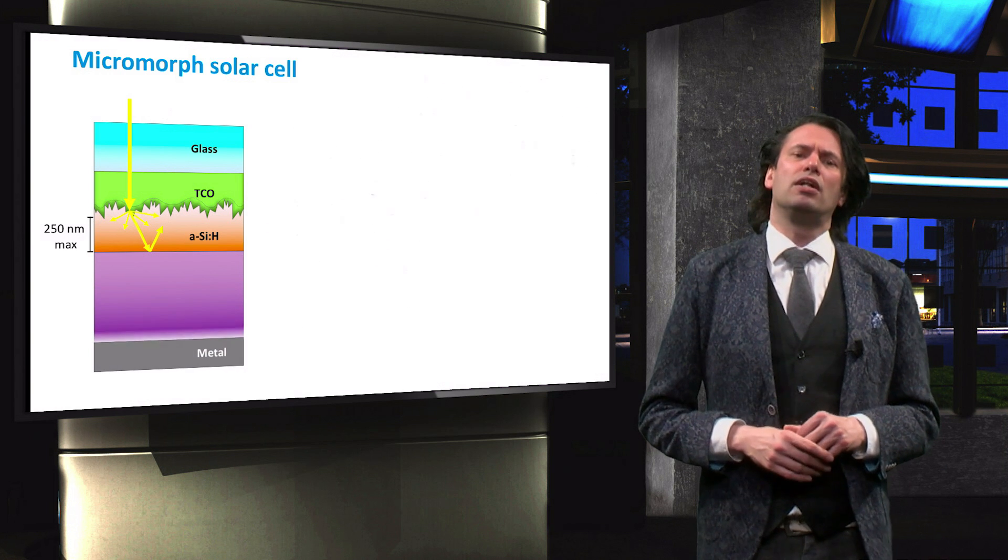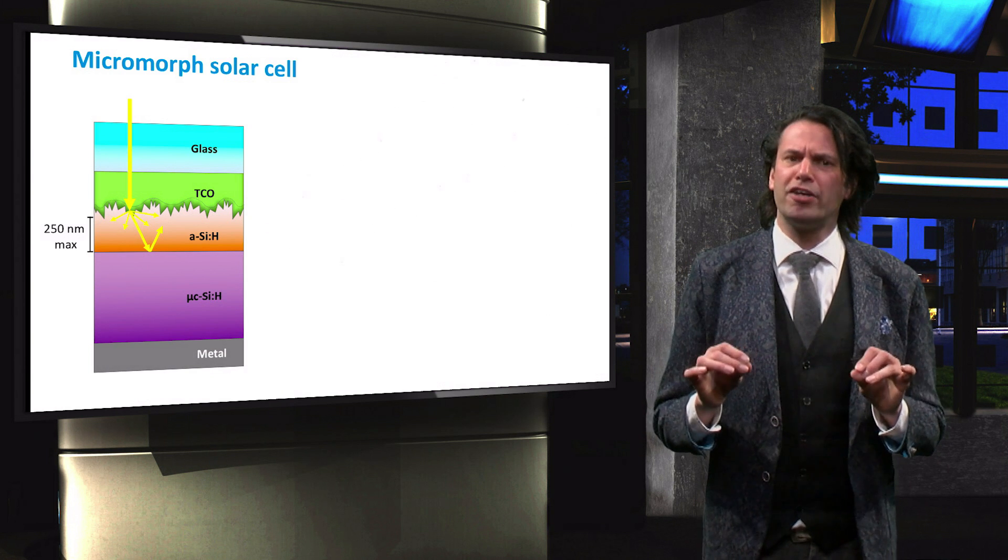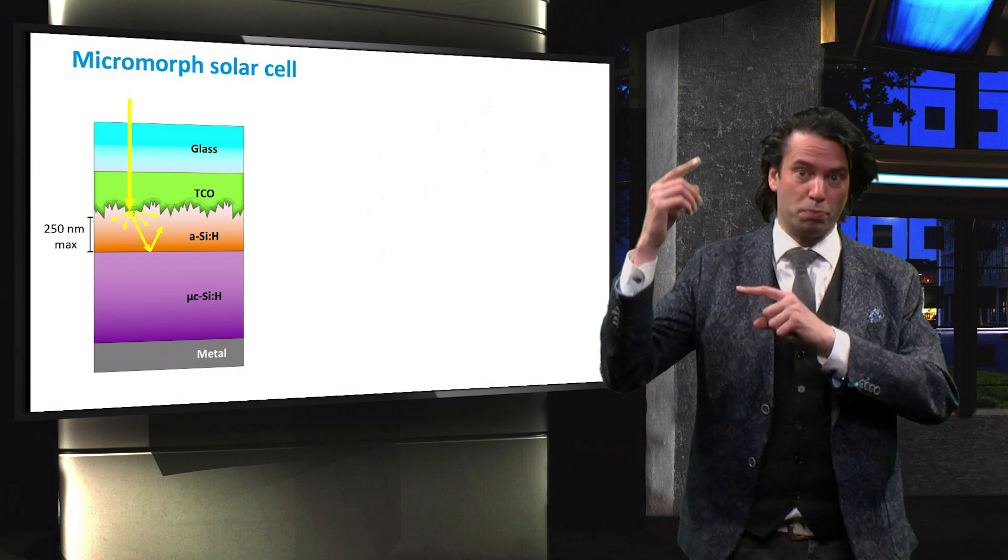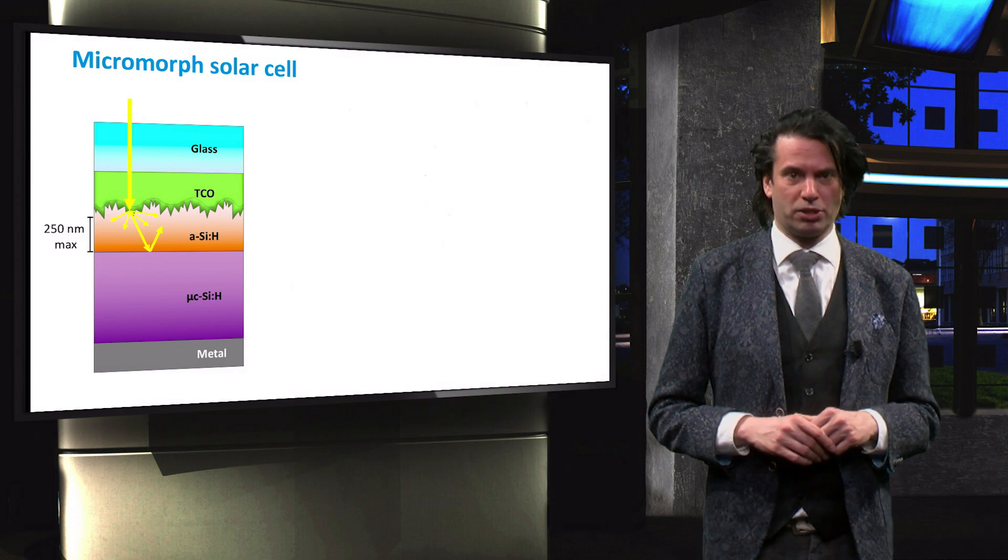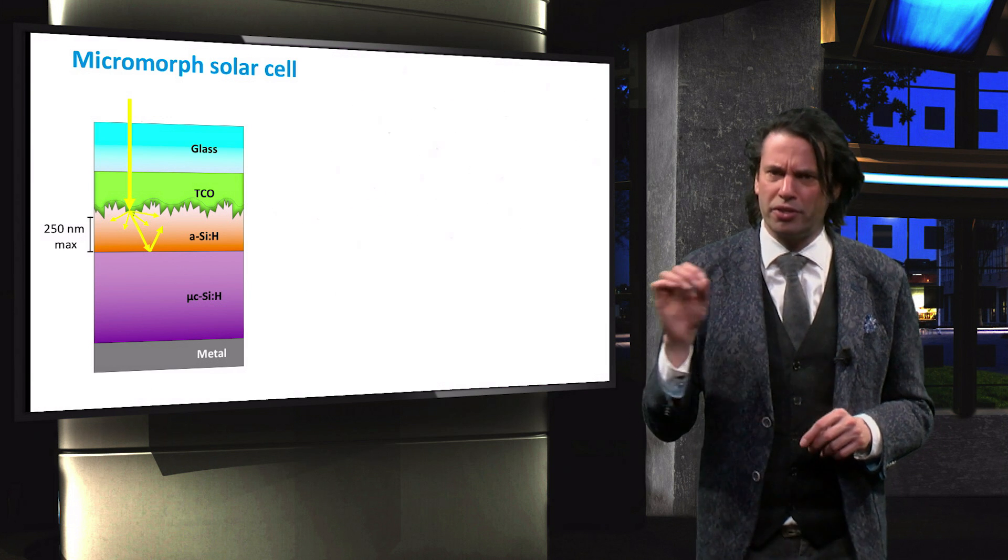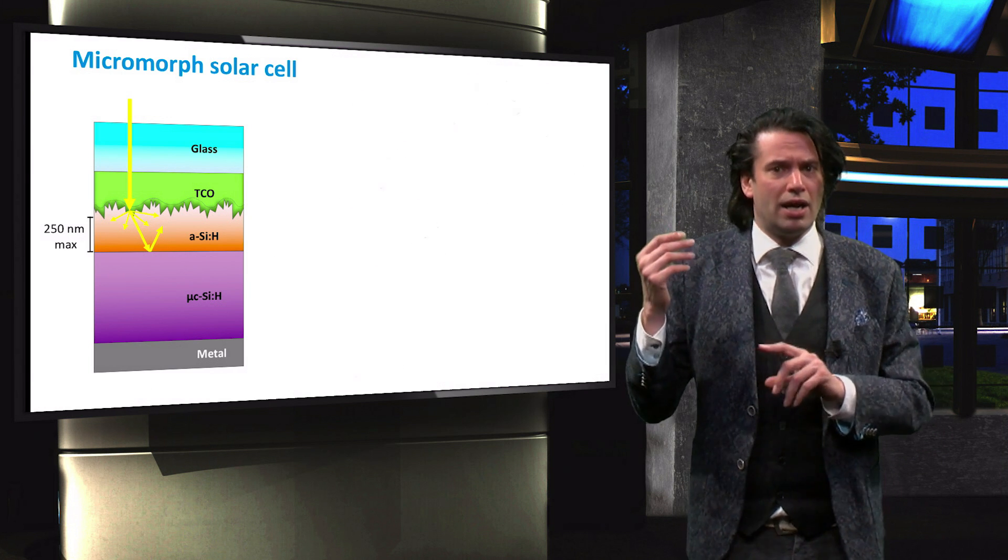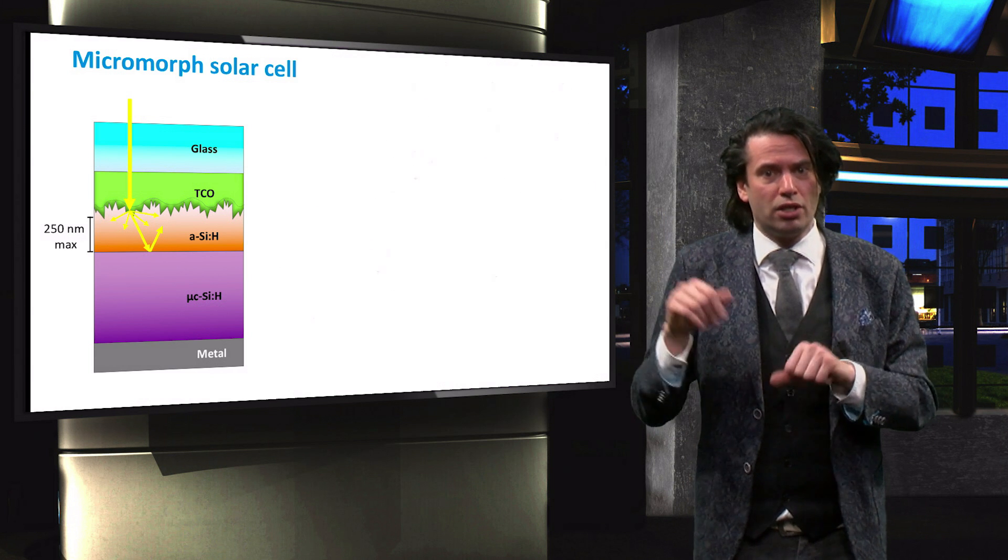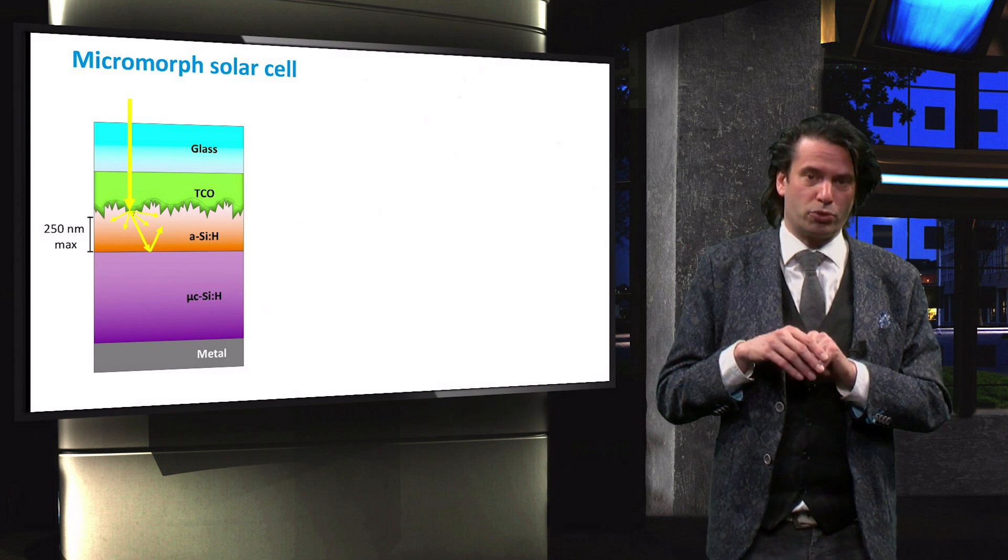A micromorph tandem cell is a multi-junction device with an amorphous silicon top cell and a microcrystalline silicon bottom cell. For one particular micromorph device, the current density produced by the amorphous top cell at the maximum power point is around 11.6 mA per square centimeter.